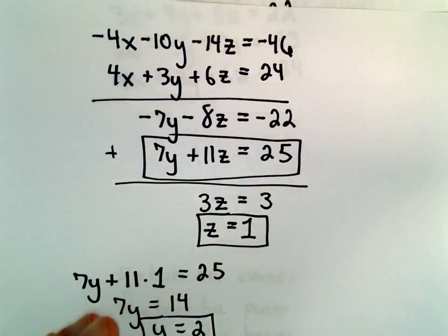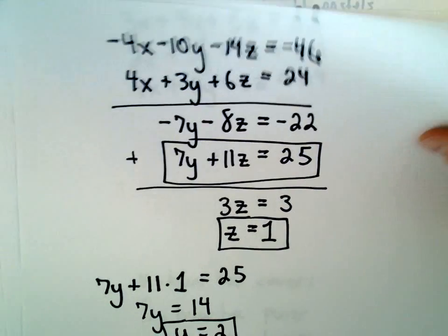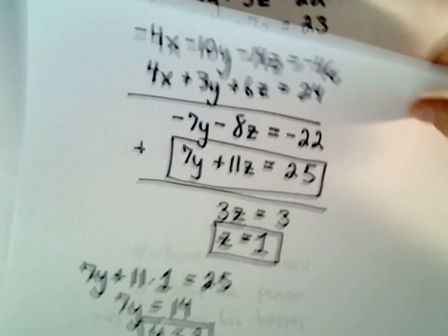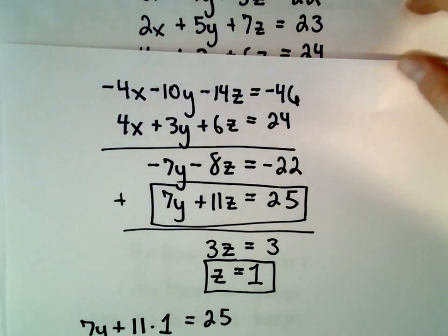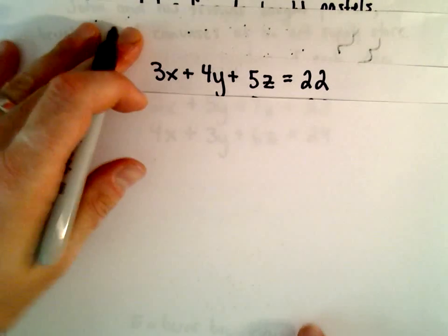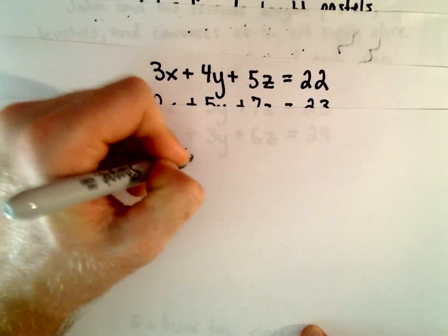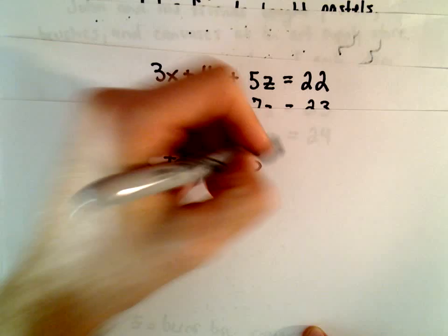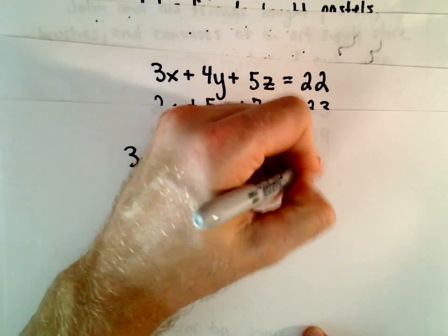And now all we have to do is go back to one of the original equations and substitute in Z equals 1 and Y equals 2. So I'm going to use the very first one. We would have 3X plus 4 times Y, which was positive 2, plus 5 times Z, which was positive 1.